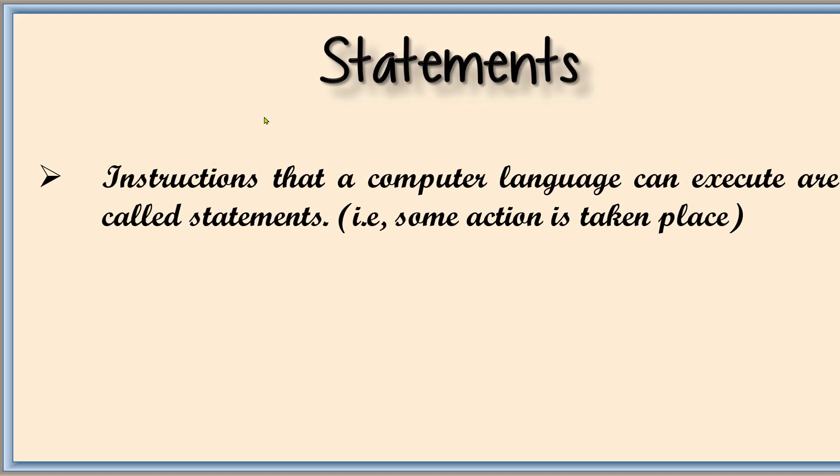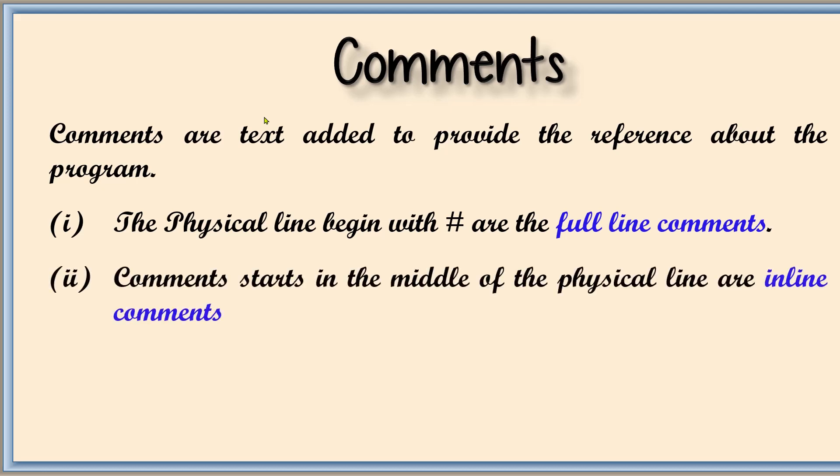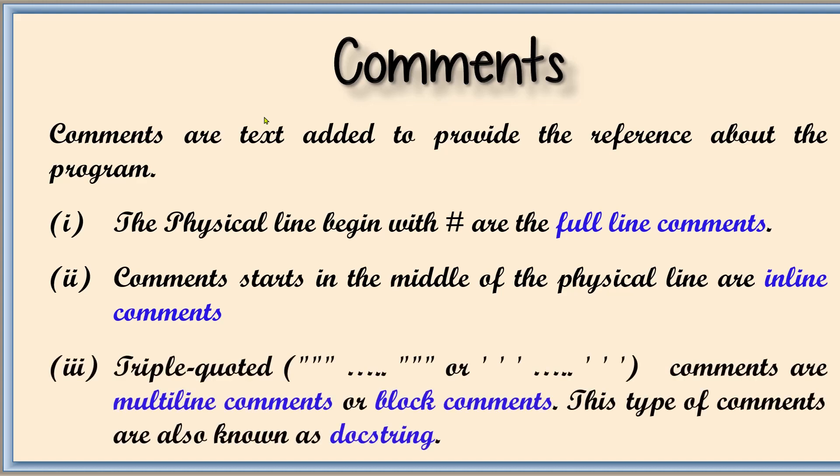Now let us revisit. Statements: instructions that a computer language can execute are called statements. It is not necessary that a statement results in a value. Comments: comments are text added to provide the reference about the program. There are three types: one is full line comment which starts with the hashtag, then inline comment which starts in the middle of the physical line. The triple quoted comments are multi-line comments or block comments. We call it as, we also call it as doc string.